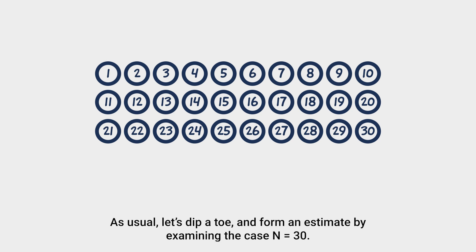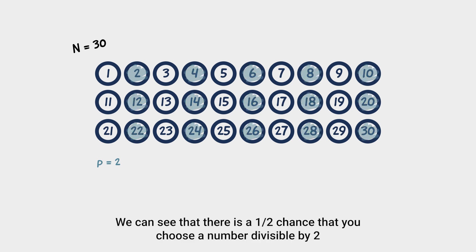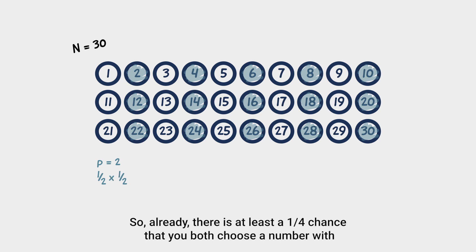As usual, let's dip a toe and form an estimate by examining the case n equals 30. Let's consider the first prime number, 2. Every second number is divisible by 2. We can see that there is a one-half chance that you choose a number divisible by 2 and a one-half chance that your friend does as well. So, already there is at least a one-quarter chance that you both choose a number with a prime factor in common.